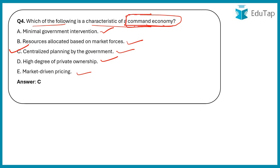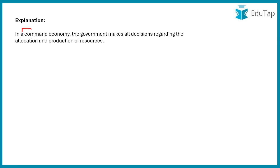In a command economy, the government decides how resources are produced and allocated. In the Indian context, this authority lies with the government. All decisions regarding production and allocation of different resources are taken by the government. This is what defines a command economy — it is decided and ruled by the government.